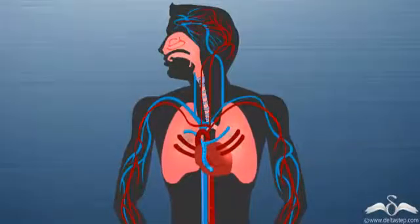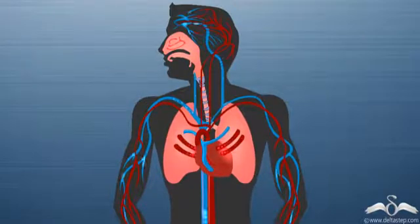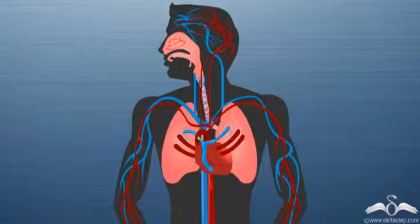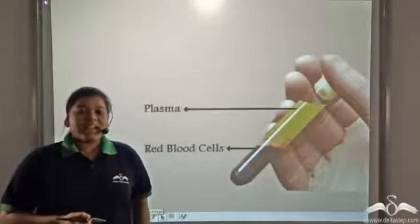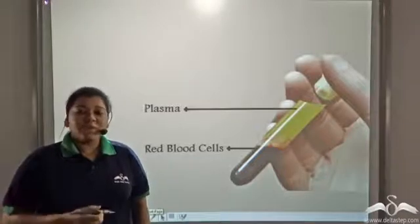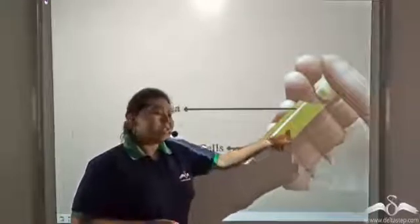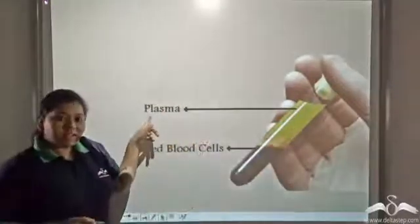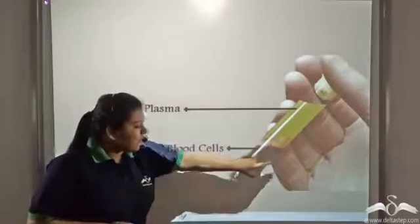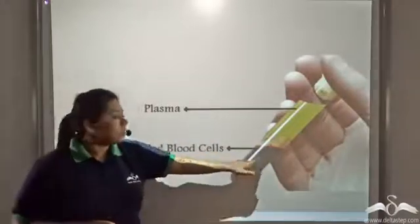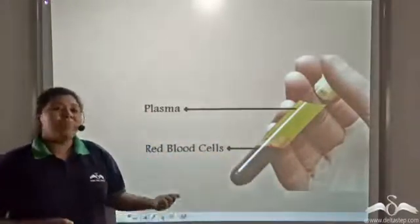Blood is the fluid connective tissue and it can transport protective substances throughout the body. Blood can be separated into two parts. The upper yellow fluid is known as plasma, and the part that sediments below is known as the formed element.